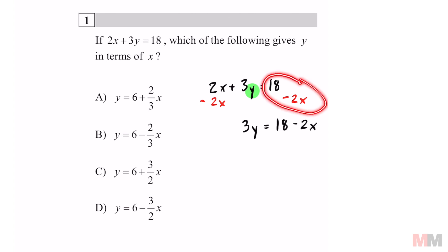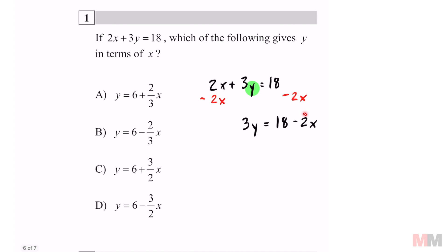So if these are not like terms, all you got to do is put them side to side just like that. The last step to get rid of this 3 that's being multiplied to that y, all you got to do is divide by 3.